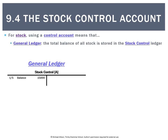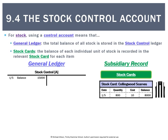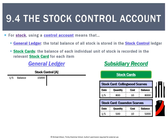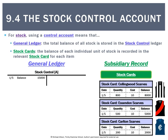Stock control is similar. In the general ledger we have one giant ledger called stock control, and then subsidiary records in the form of stock cards — one for every product we sell. For example, there's a stock card for Collingwood scarves: 800 scarves at $10 each, totalling $8,000. Essendon scarves: 500 at $10, totalling $5,000. Carlton scarves: 200 at $10, totalling $2,000.